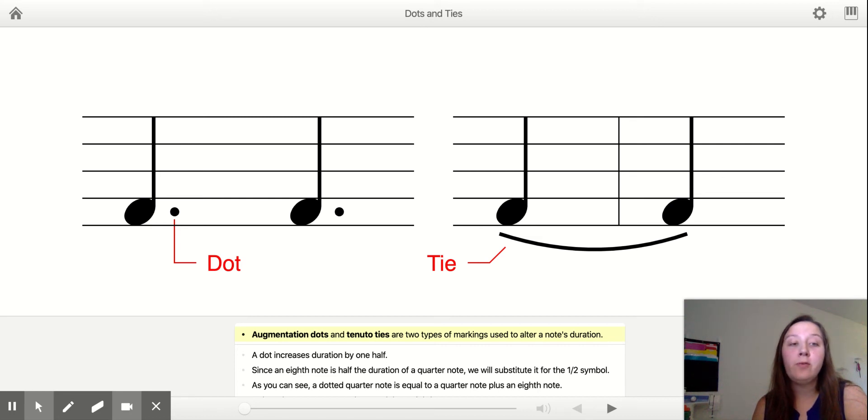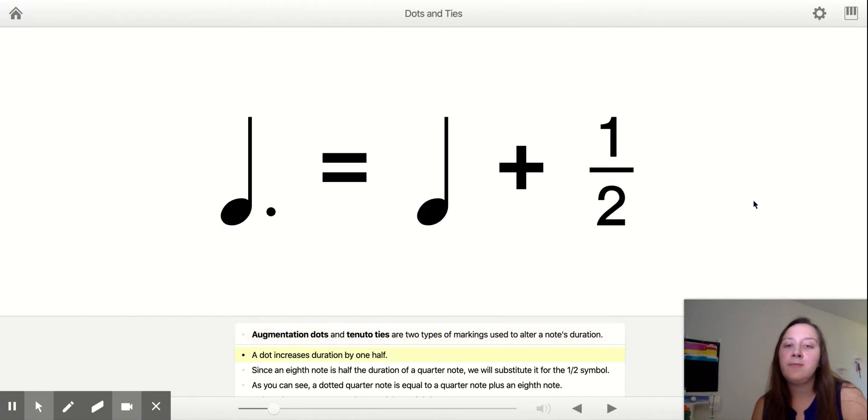Hey, we're going to do some review for dots and ties. These are both things that can take whatever note value you have and lengthen it in some way. So we're going to talk about dots first.